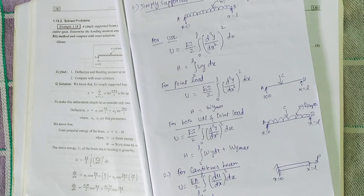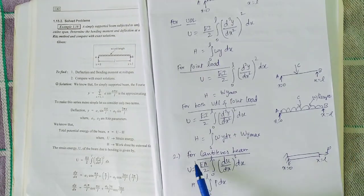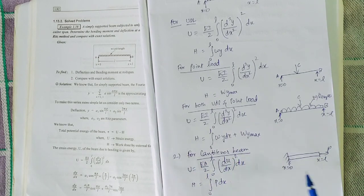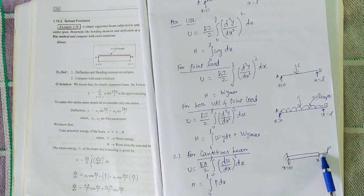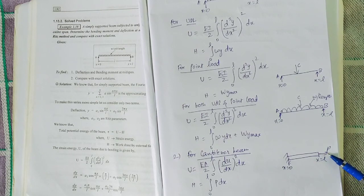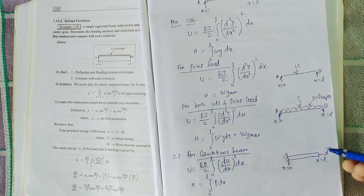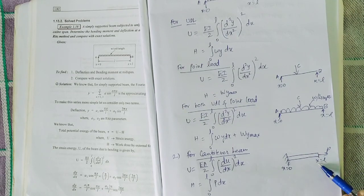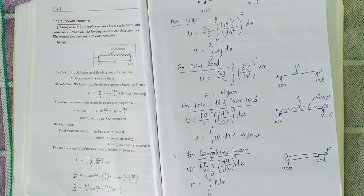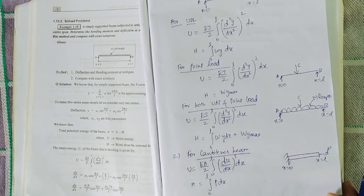At any point, how do you find the deflection of the beam? How do you find the bending moment of the beam? Next is the cantilever beam. For the cantilever beam, one side is fixed and the other side is free. At the free end, there is a load acting. When the load acts, it will deflect — that gives the deflection and bending moment.